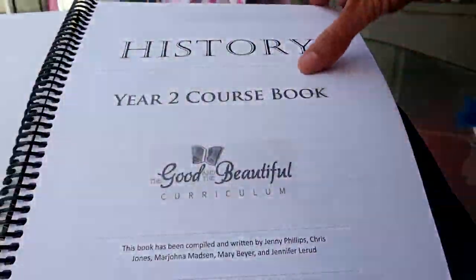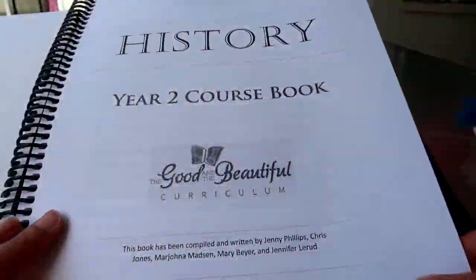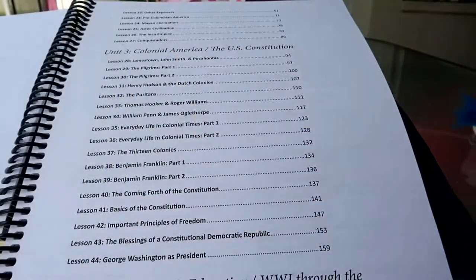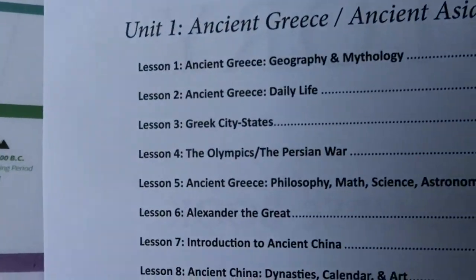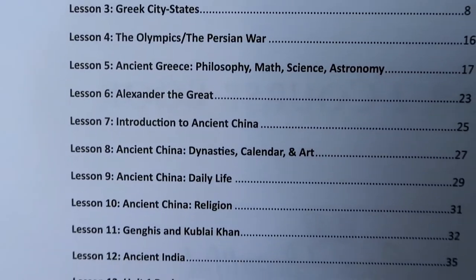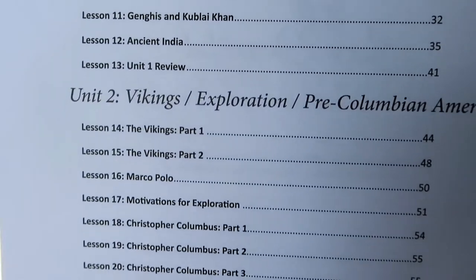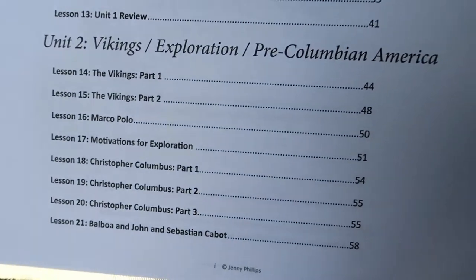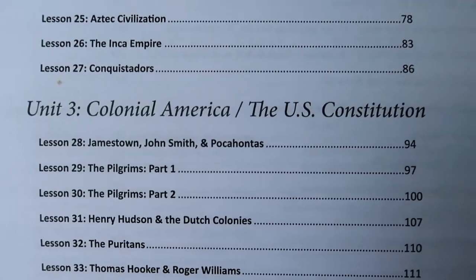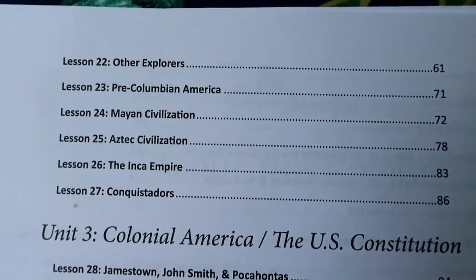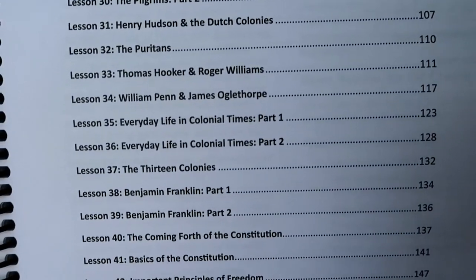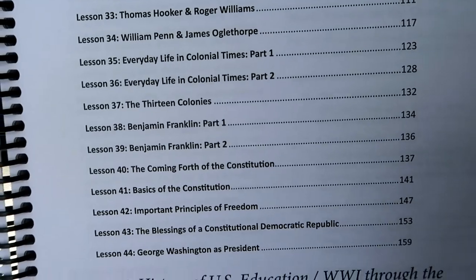In this course book you will find the whole sweep of history with an emphasis on US history and principles of freedom. Each year, all history courses years 1 through 4 cover ancient times through modern history, but each course stops in different places and time periods to explore in depth. Thus children see the whole sweep of history and how it fits together during each course.